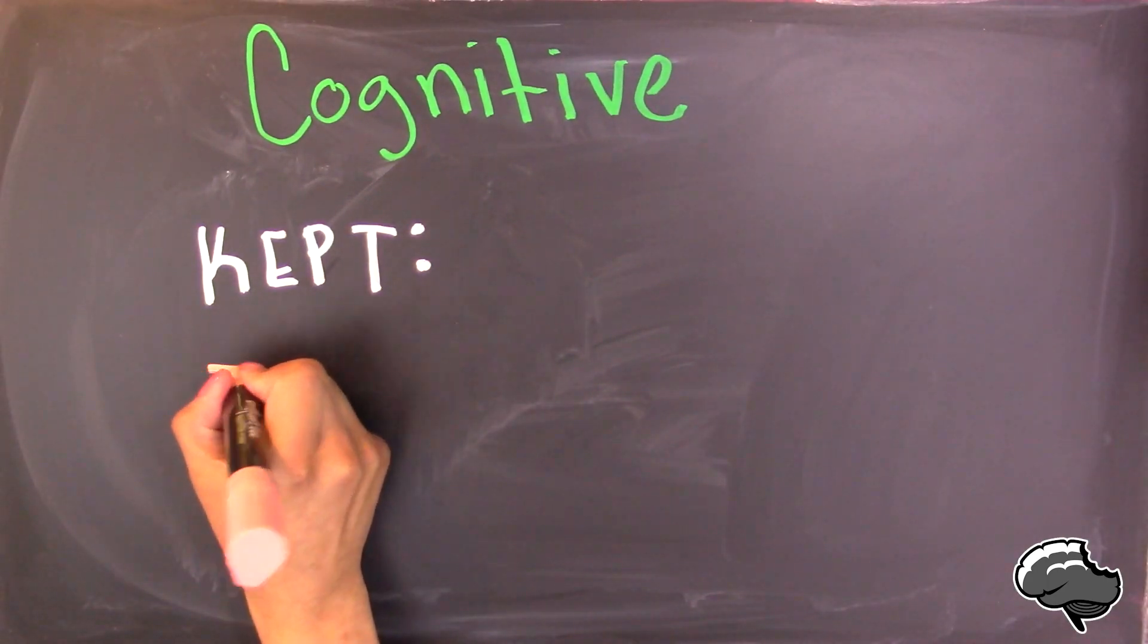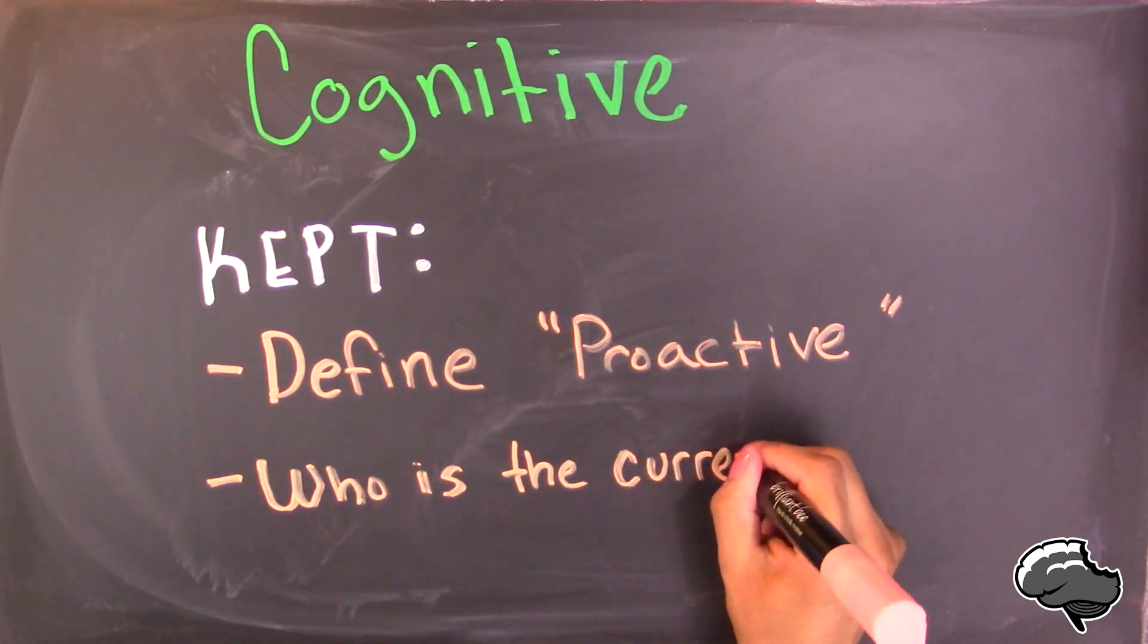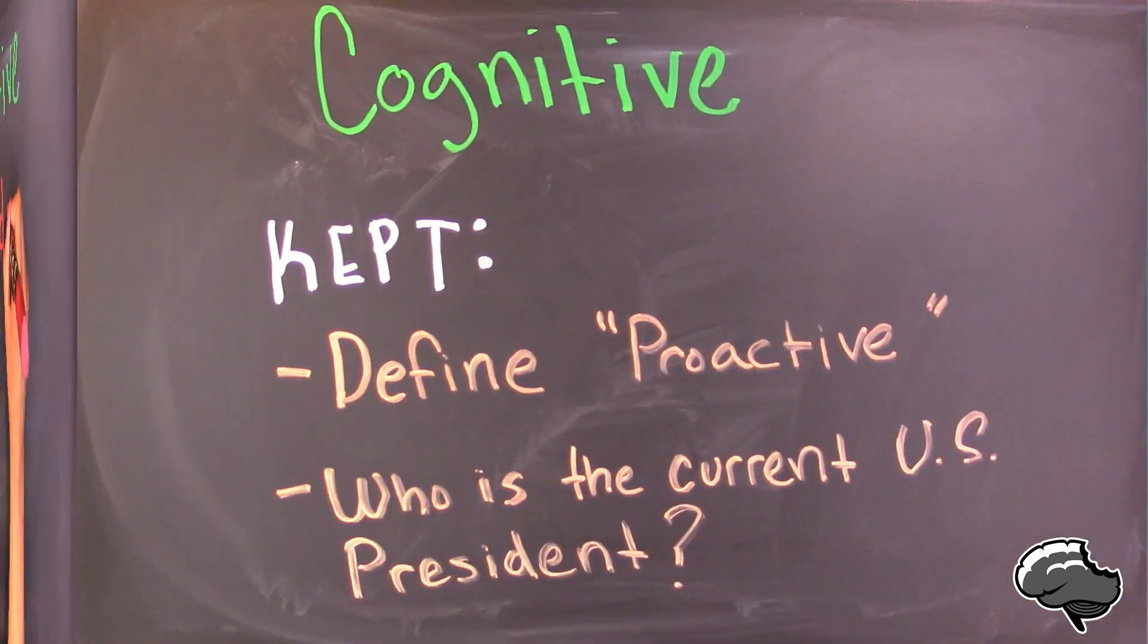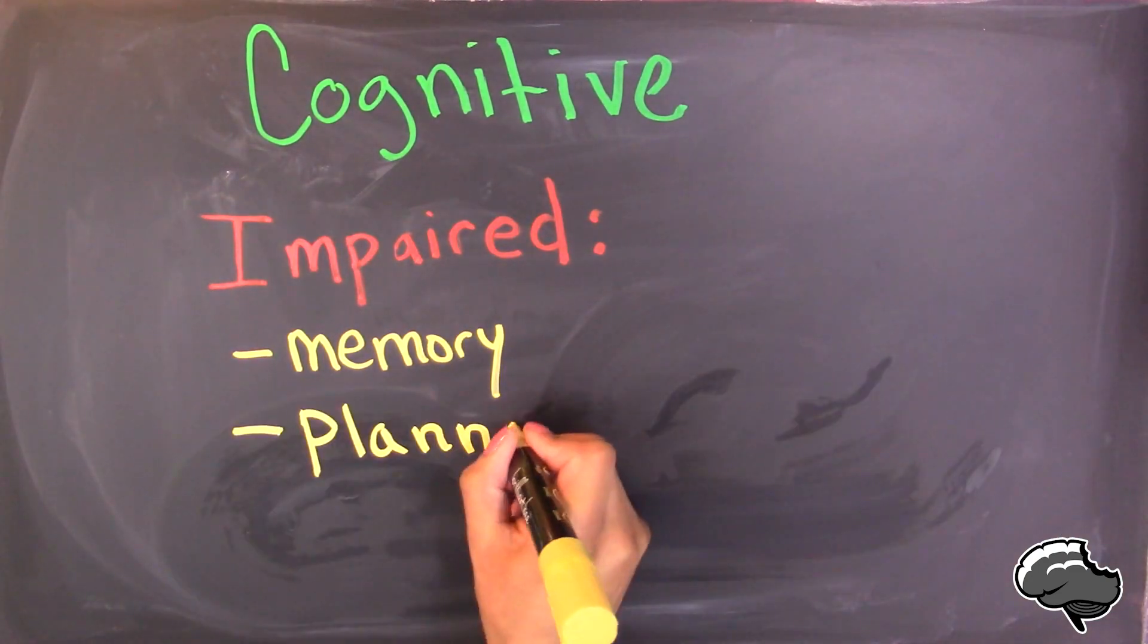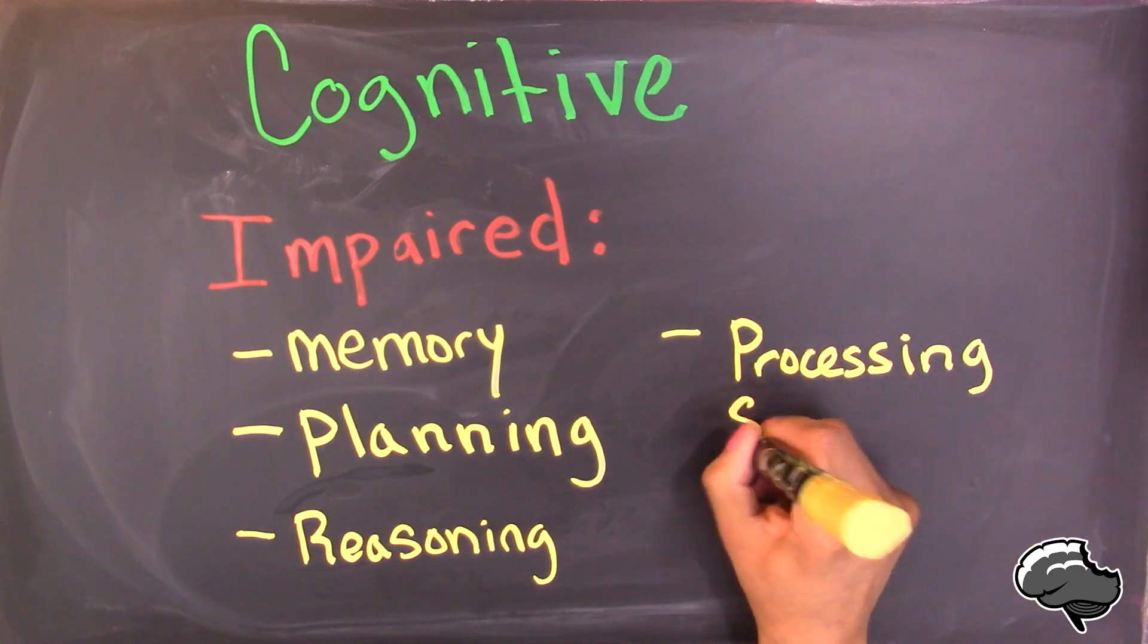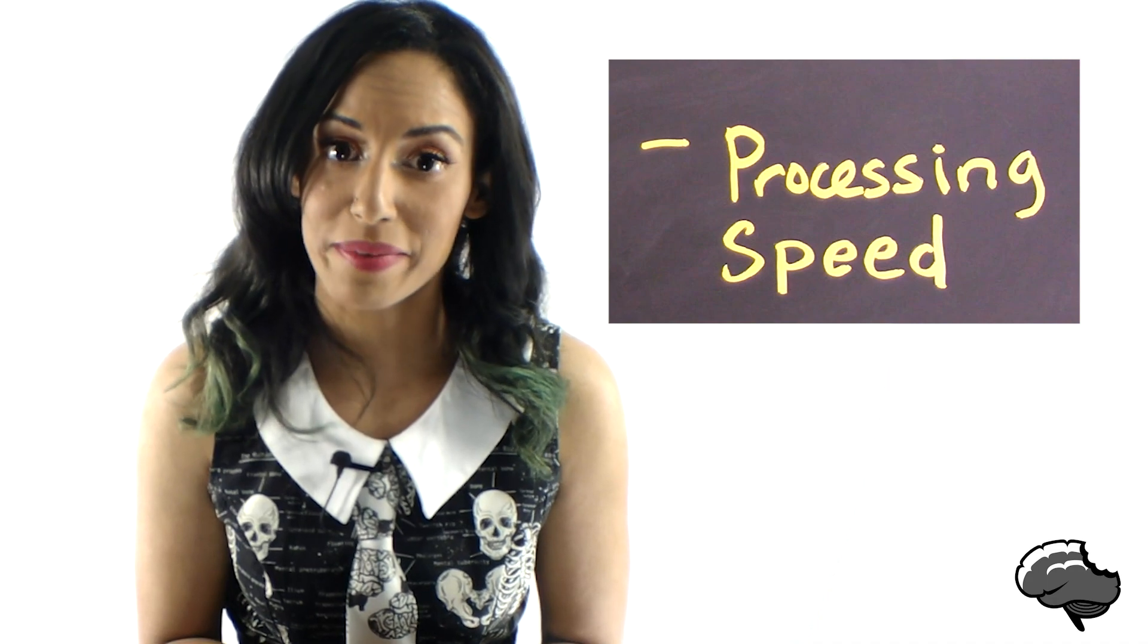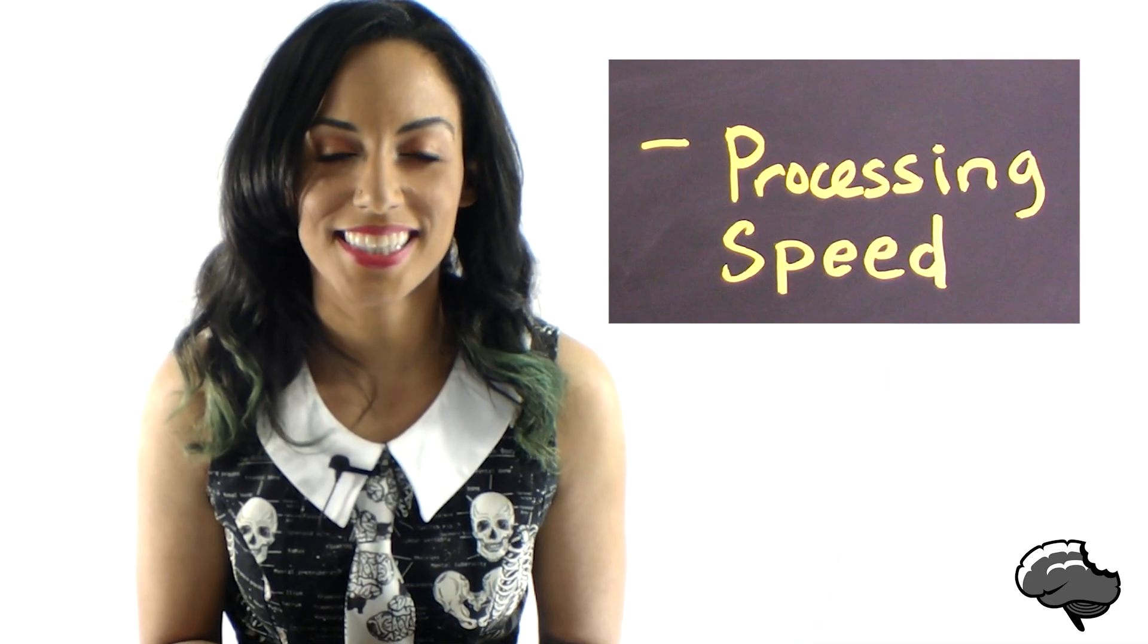But some mental functions, such as verbal ability and general knowledge, largely remain unimpaired. Other abilities—memory, executive functioning, reasoning skills, and processing speed—seem to experience impairments, some of which, like processing speed, begin to show signs of impairments during one's 30s.